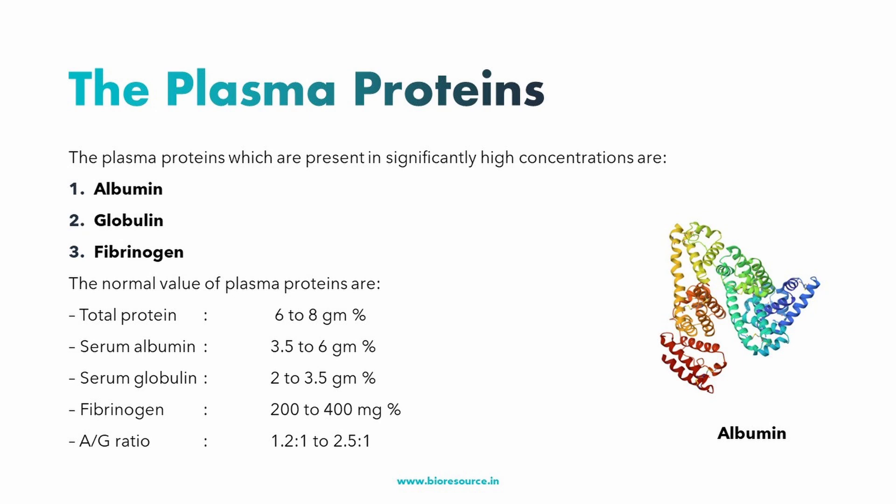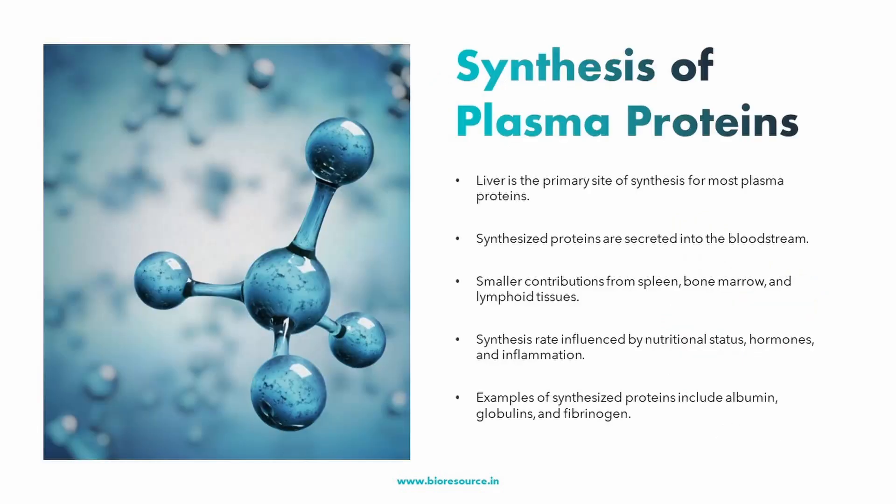Let's look at the synthesis of plasma proteins. The liver is the primary factory for plasma protein production. The hepatocytes — the liver cells — are the machinery for protein synthesis. Other organs like spleen, bone marrow, and lymphoid tissues also contribute to a lesser extent. The rate of protein synthesis can be influenced by various factors including dietary intake, hormonal levels, and inflammatory conditions.